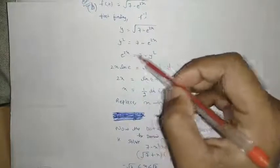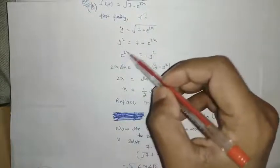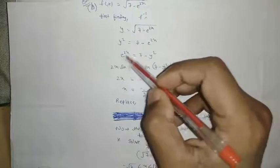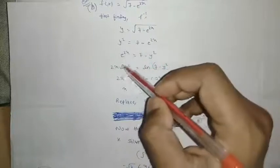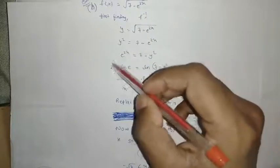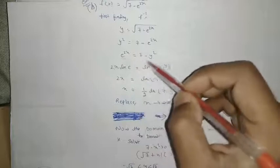Now how do we get e^(2x)? This is 7 - e^(2x) = y². Finding the x value by taking ln on both sides. Taking ln both sides: 2x ln e, and this 2x will come out using the ln property, and this is ln(7 - y²).